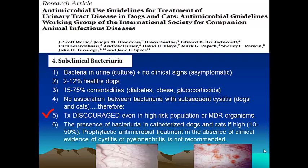Another common cause of bacteriuria is urethral catheterization, occurring in 10% to 50% of cases depending on the study. The key question is whether there is a true cystitis requiring treatment or subclinical bacteriuria that should not be treated. The recommendation is clear: prophylactic antimicrobial treatment in the absence of clinical evidence of cystitis or pyelonephritis should not be given.